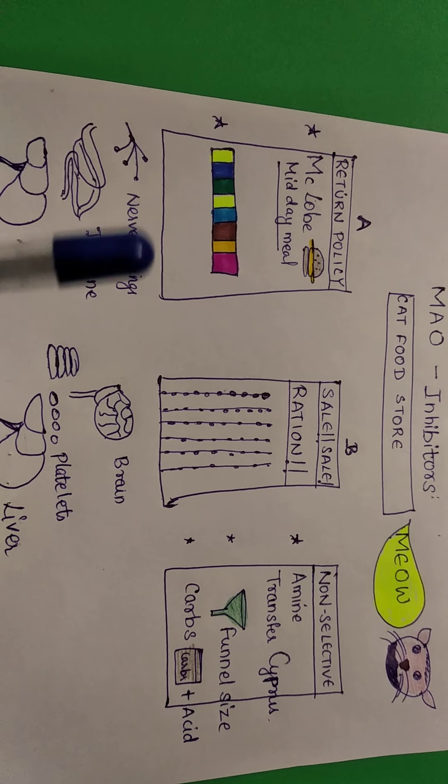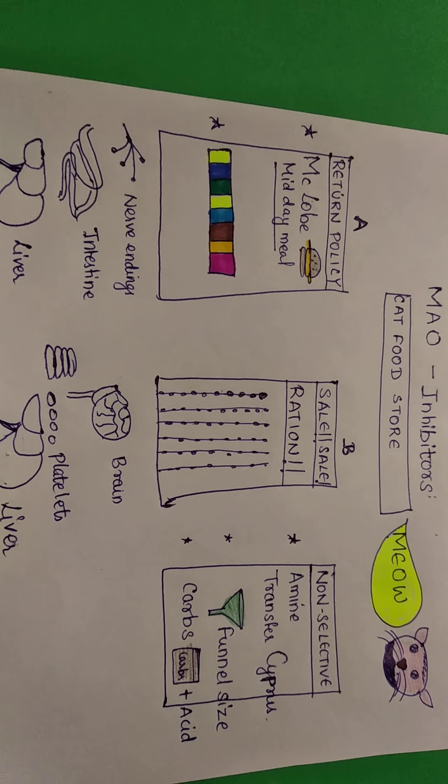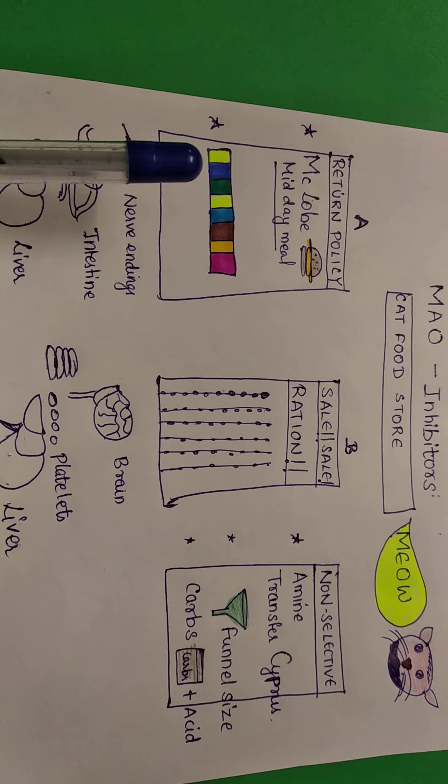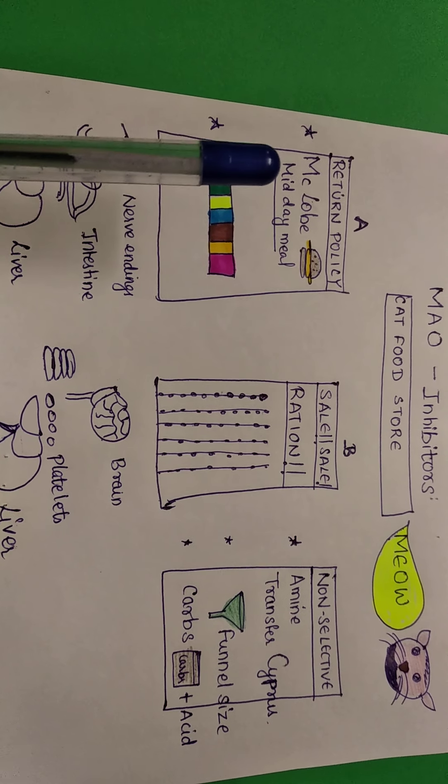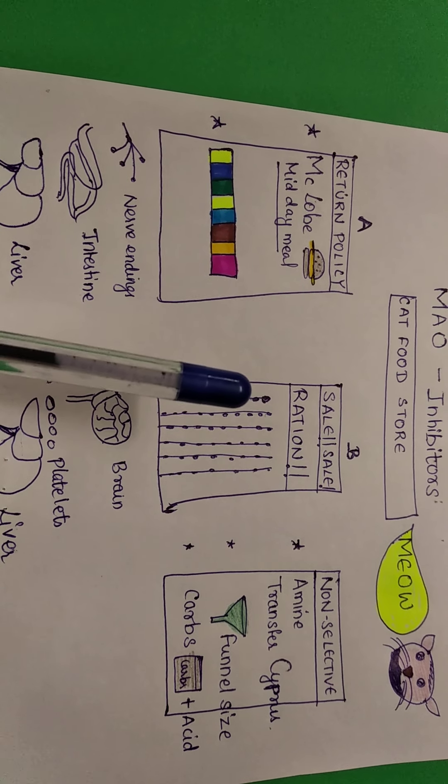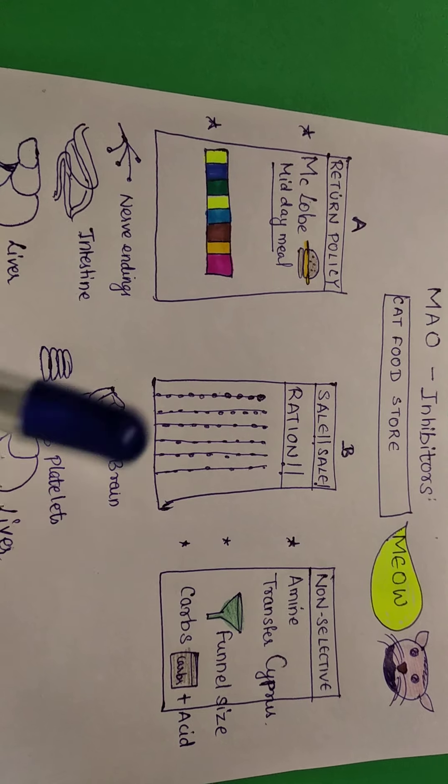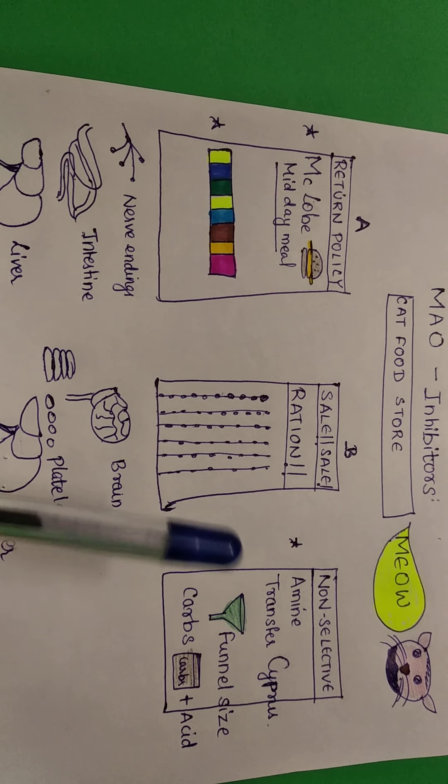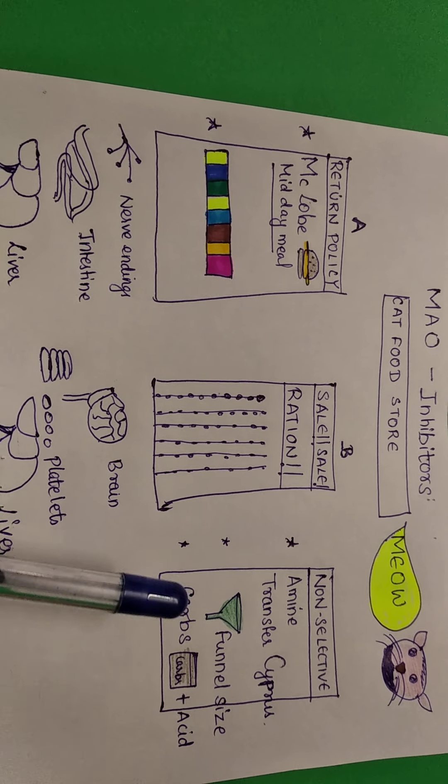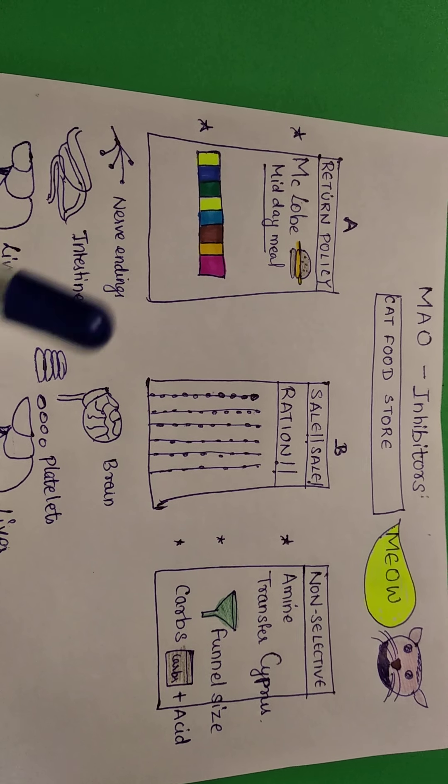Section A is all about return policy. Whatever you get, we can return it. Section B is all about sale, sale and ration. And the other section is a miscellaneous section or a non-selective section.